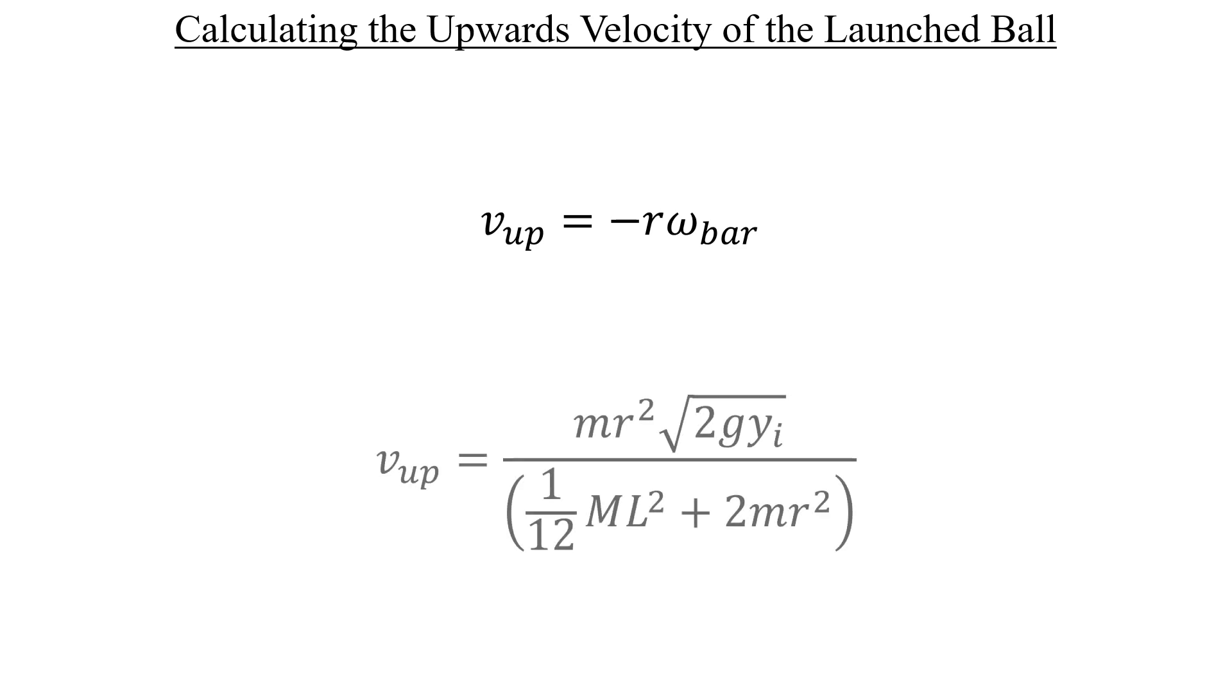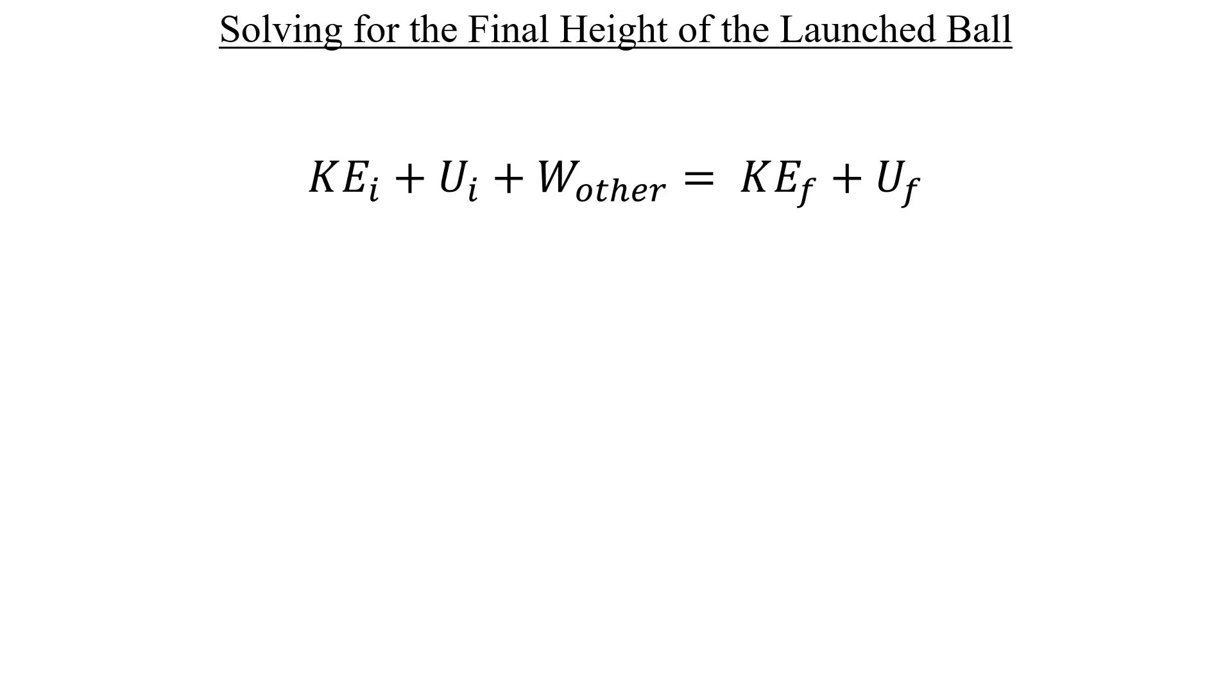We're now ready for the last stage, stage five. To get that launched ball's final height, we can take advantage of the conservation of energy equation once more. This time the initial side represents the moment right as the ball is being launched upwards, and the final side is when it reaches that maximum height. Starting from the left, we have our launched ball being propelled from y equals zero, so the initial potential energy term can be thrown away. Same goes for that other work term. Once the ball reaches the final height, all of the kinetic energy will be converted to potential, so let's get rid of that term too.